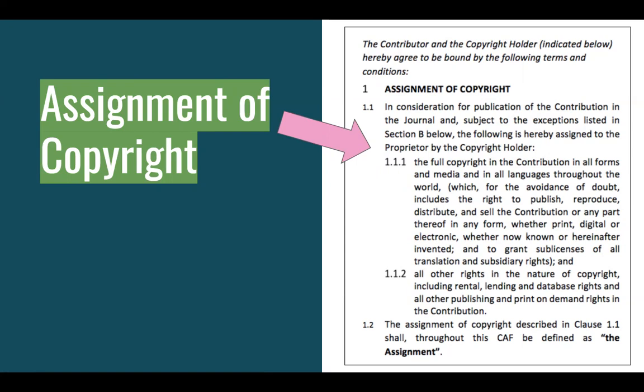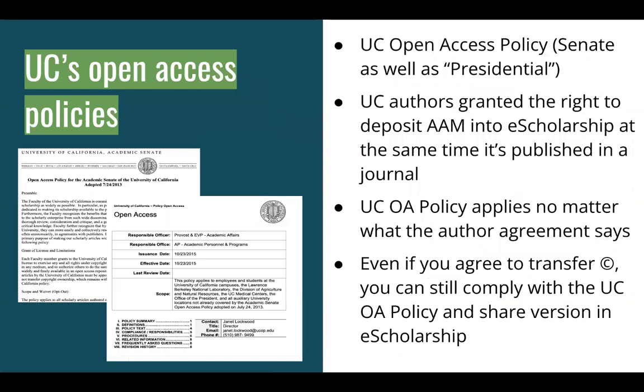Unless the publication agreement reserves certain rights for you as the author, that copyright transfer would mean you no longer have the rights to share the final article on your own website or in an institutional repository like eScholarship. This is where understanding US copyright law and the UC's copyright ownership policy comes into play. If you've transferred your copyright, you might not be able to exercise those rights — making and sharing copies, creating adaptations — because now the publisher has those rights. Luckily, this is where the University of California's open access policy can really help.